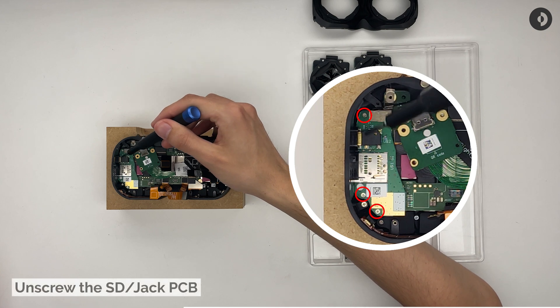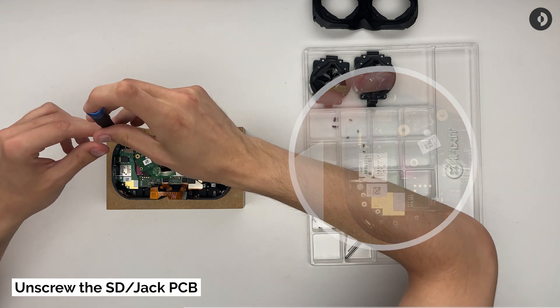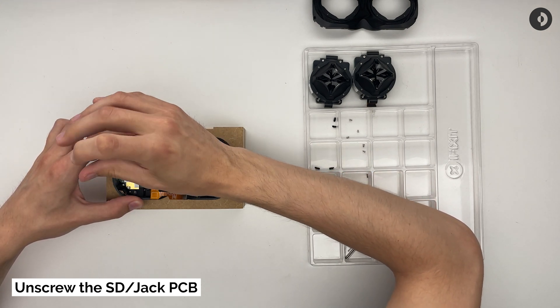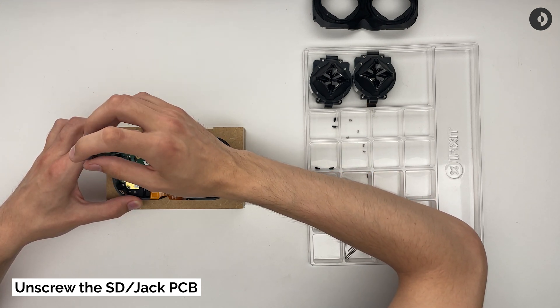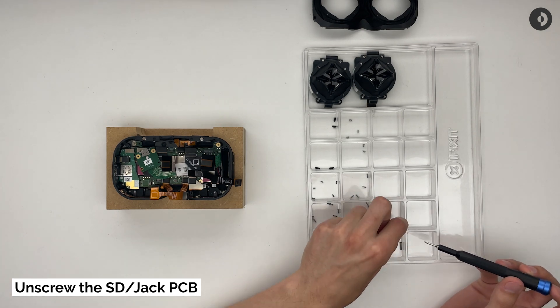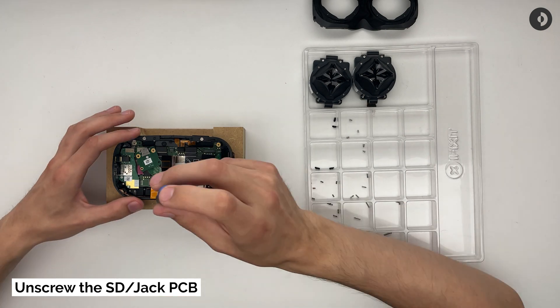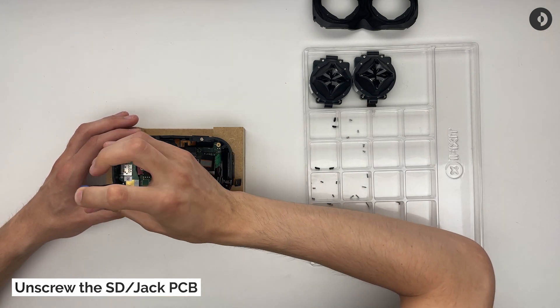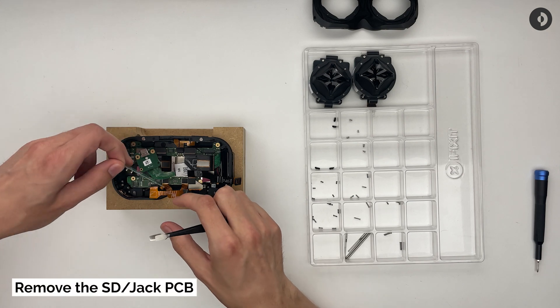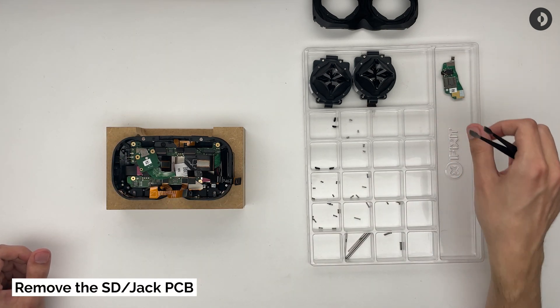To disconnect the SD jack PCB, remove all three screws. When lifting up this PCB out of the front stack, you will disconnect the board-to-board connectors.